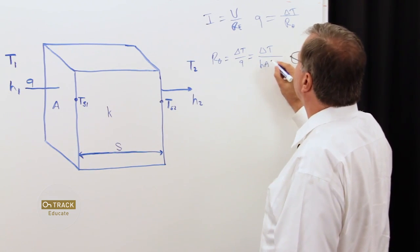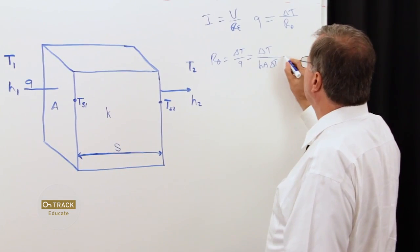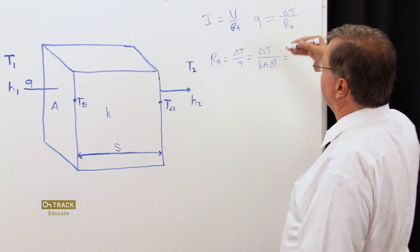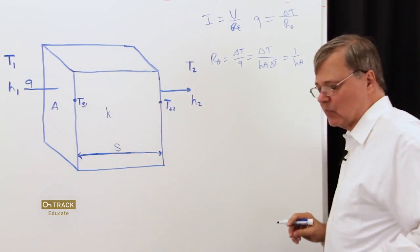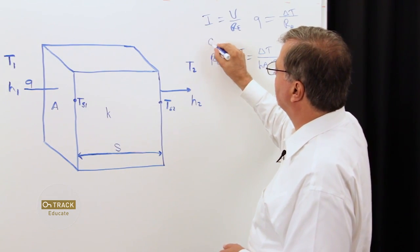H times the area over delta T, which then is simplified down to 1 over HA. And this is for our convective model.